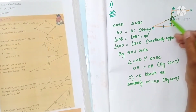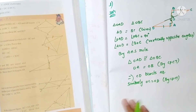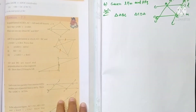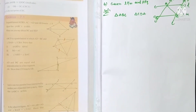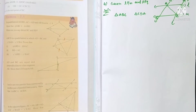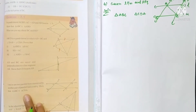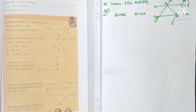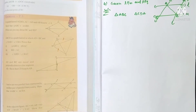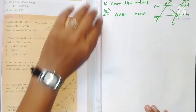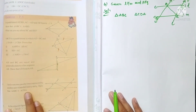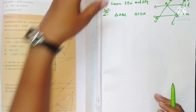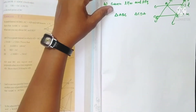Similarly, we can write OC is equal to OD — corresponding parts. Next problem: L and M are two parallel lines intersected by another pair of parallel lines P and Q. Show that triangle ABC is congruent to triangle CDA.